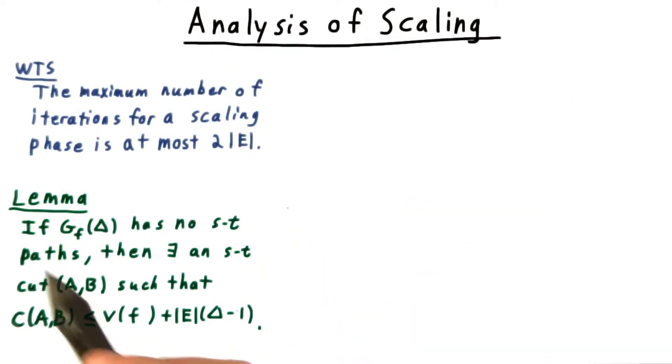We start with the following lemma. If the residual graph with threshold delta has no ST paths, then there exists an ST cut AB, such that the capacity of the cut is at most the value of the flow plus the number of edges times delta minus 1.